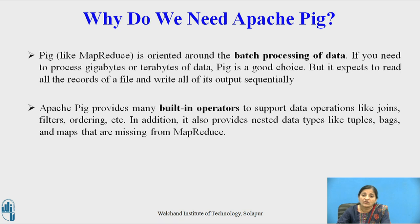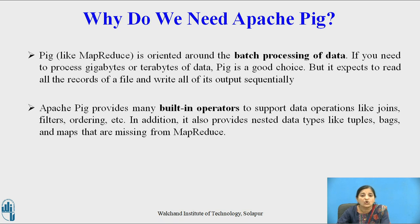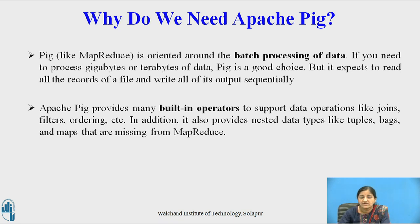Pig is oriented around batch processing of data. If you need to process gigabytes or terabytes of data, Pig is a very good choice. But it expects to read all the records of a file and write all of its output sequentially. Apache Pig provides many built-in operators to support data operations like joins, filters, and ordering. In addition to this, it also provides nested data types like tuples, bags, and maps that are missing from normal MapReduce in Java.